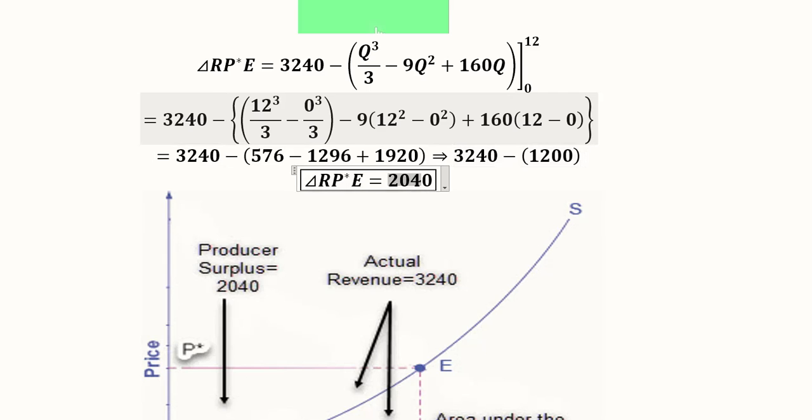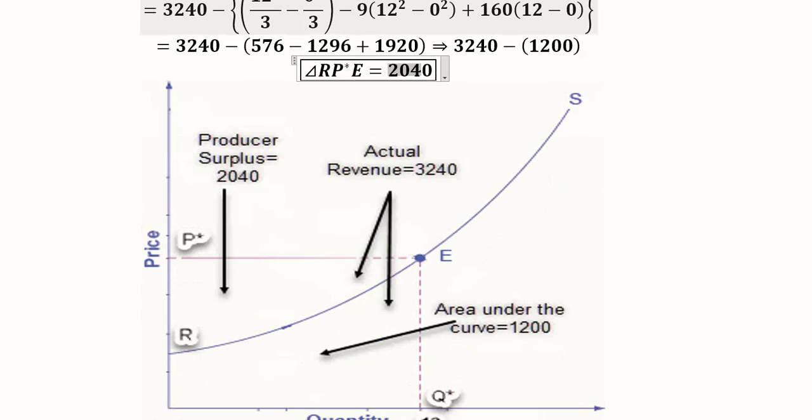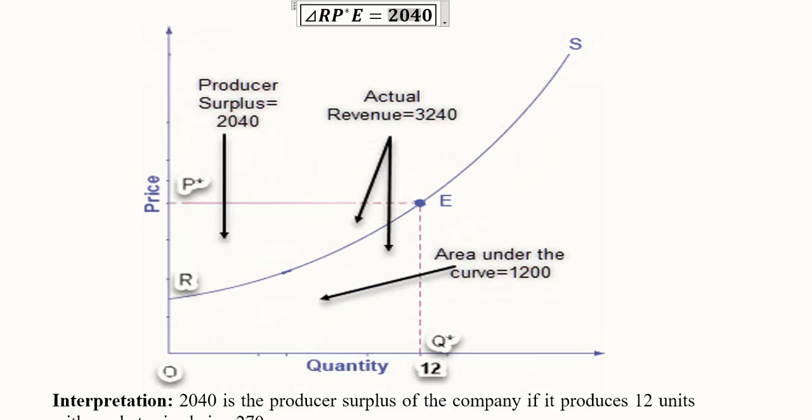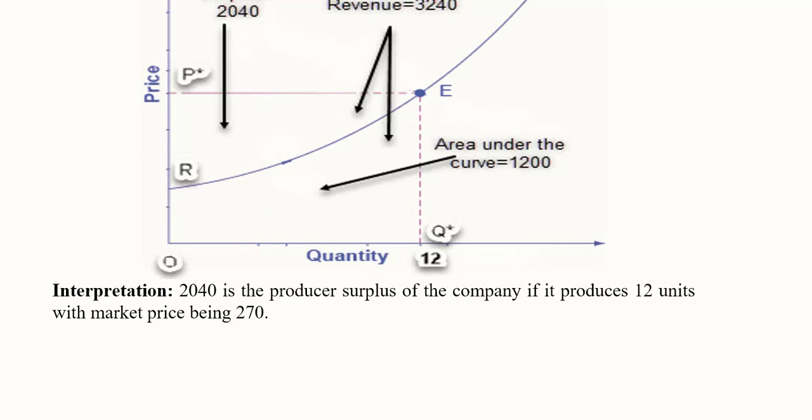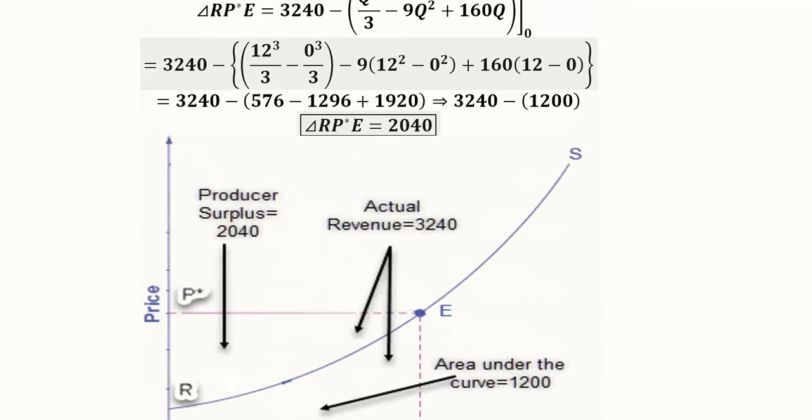We will get this triangle area which is showing the producer surplus which is 2040, and which is the difference of the actual revenue, the rectangle, and the area under the curve which is 1200. Once we calculate the difference, we get the producer surplus and it will take place if 12 units are produced and the market price is 270 units.